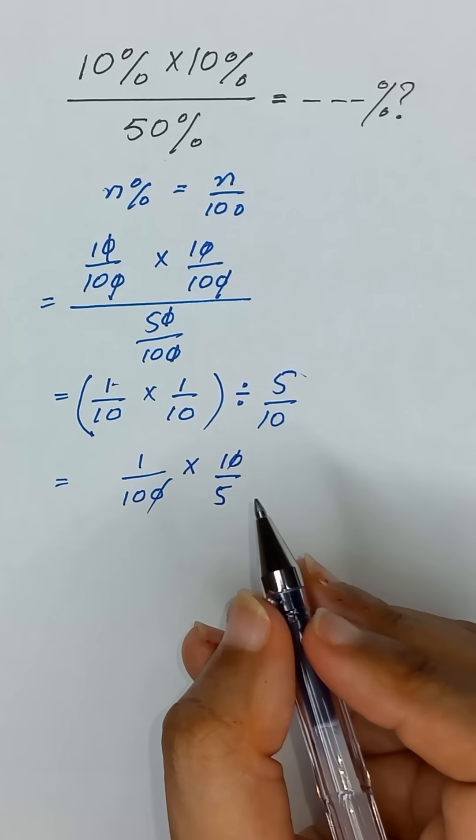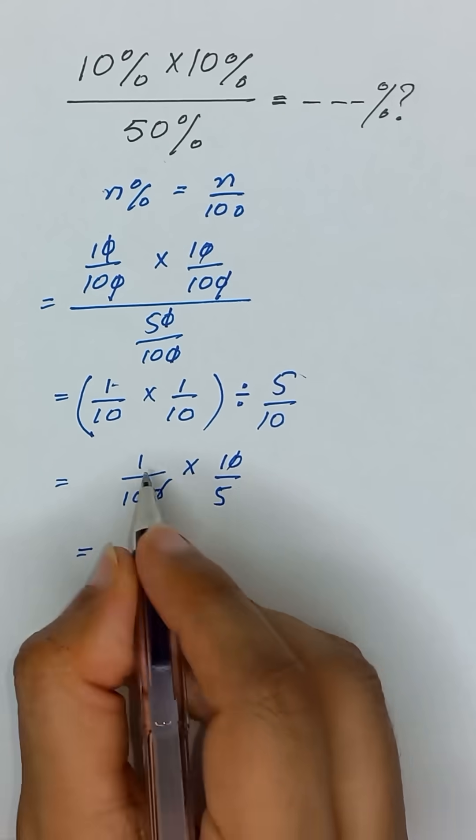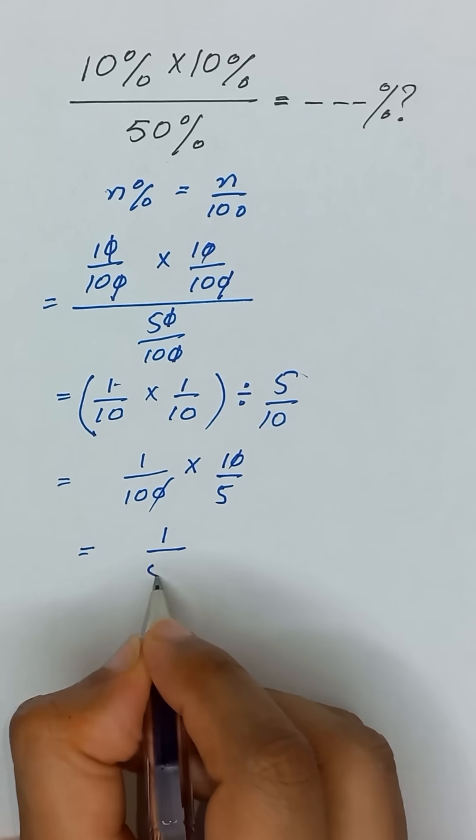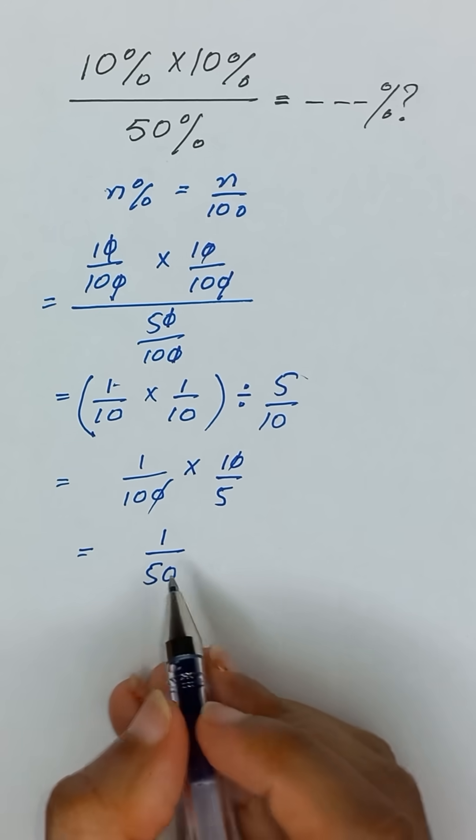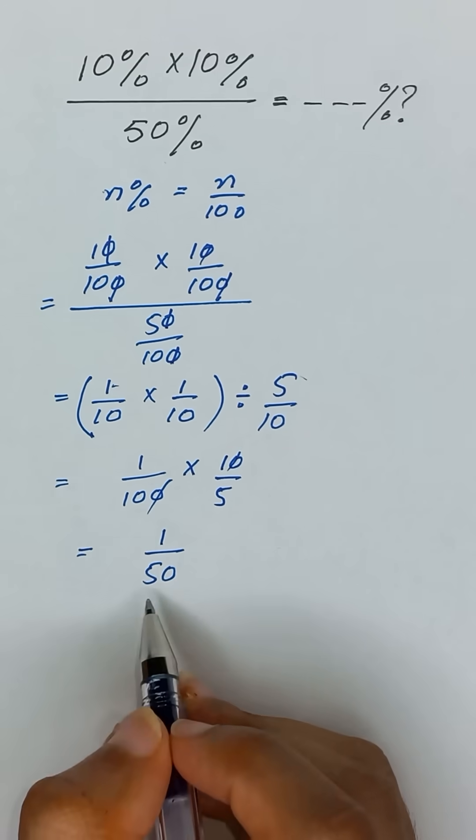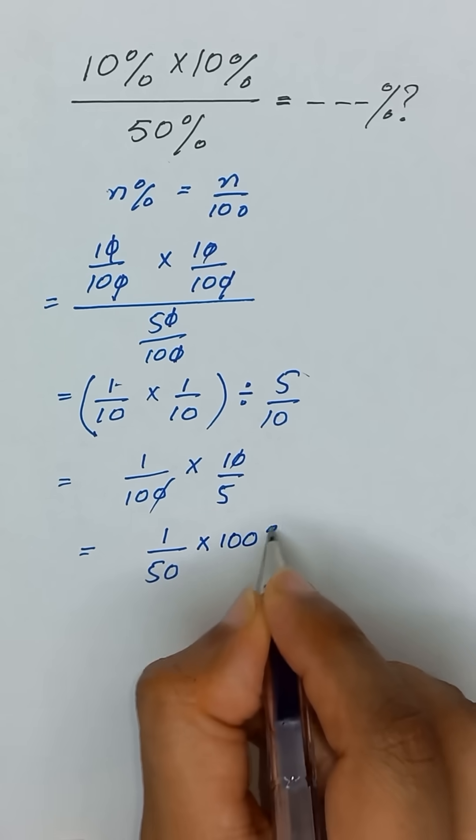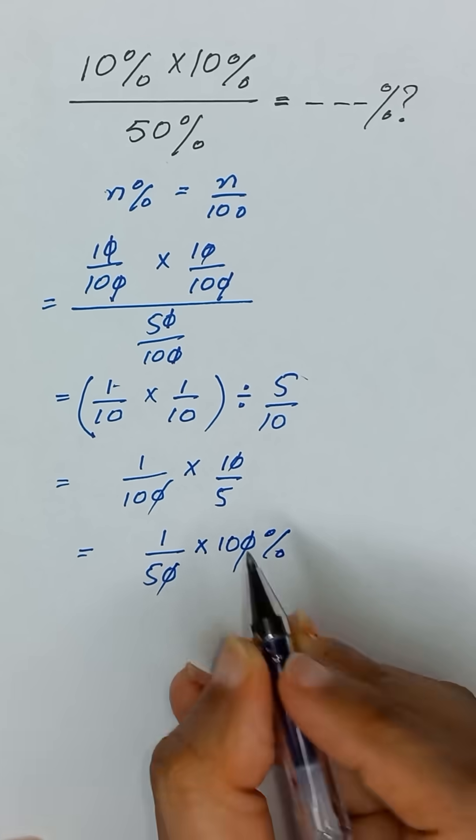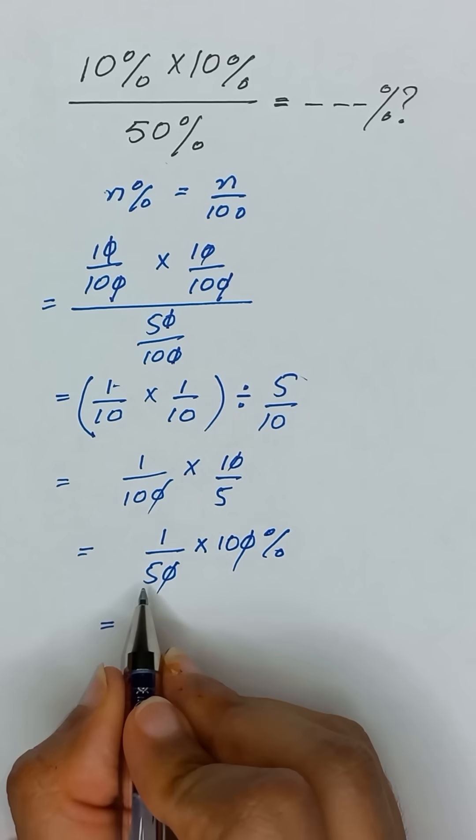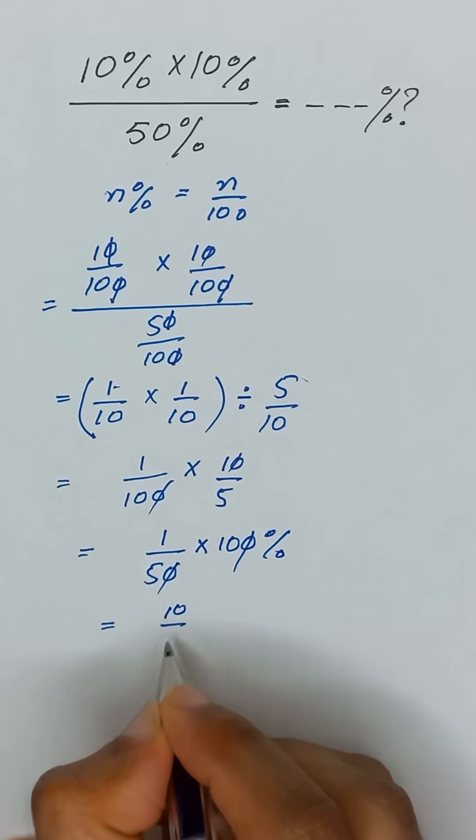So this 0 and 0 will be cancelled out and it will give us 1 divided by 50. Now to change this fraction into percentage, we will multiply it with 100%. This 0 and 0 will be cancelled out and it will become 10 divided by 5%.